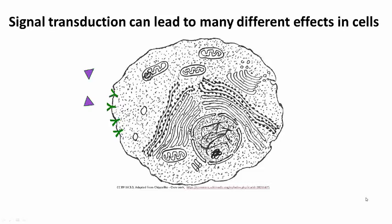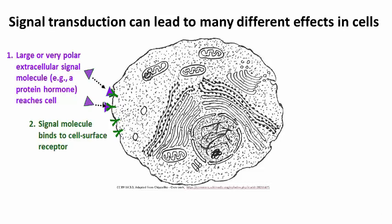Signal transduction produces many different effects in cells, from regulating enzyme activity to controlling gene expression. A large or polar signal molecule binds to the cell surface receptor shown here. The cellular response includes the phosphorylation of proteins.